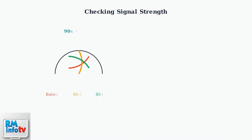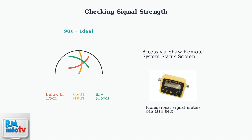Let's start with signal strength. You can check this through your receiver system status screen. Signal strength is measured on a scale where readings in the 90s are ideal. Above 85 shows as green and is good. Below 65 appears red and will likely cause reception issues. You can check your signal strength through the system status screen using your SHA-REMOTE. Professional signal meters like this one can also help technicians diagnose signal issues.